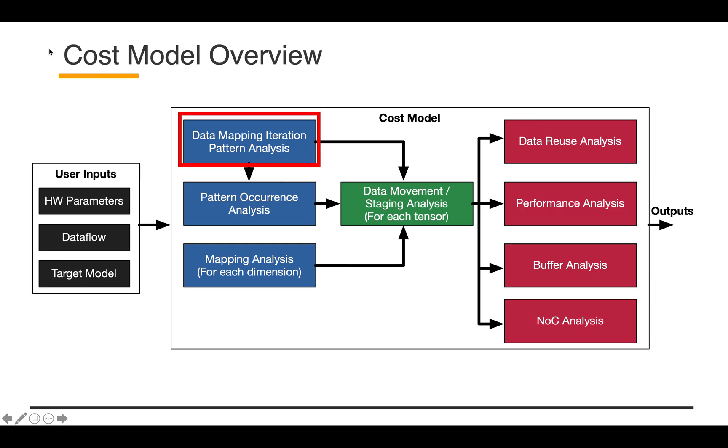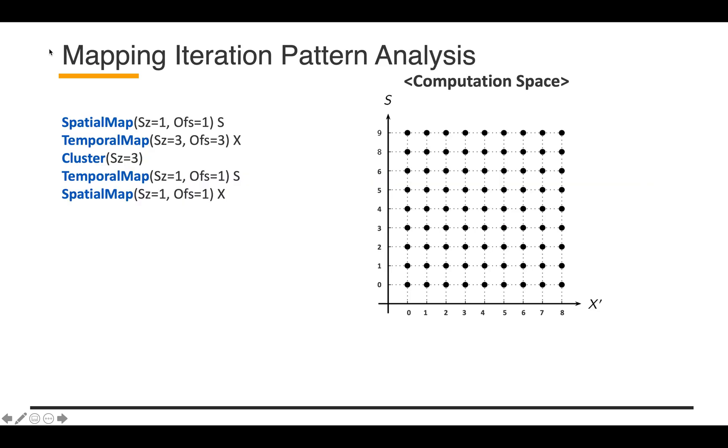Let's take a look at the data mapping iteration pattern analysis first. This is an example mapping. On the right side, I have the computation space to visualize this mapping. Let's assume that we have three PEs. The first PE will have these computations and corresponding data. Because this is a CONV1D operation, the loop iterator is exactly the same as the data indexes, so you can regard those as the data indexes as well.